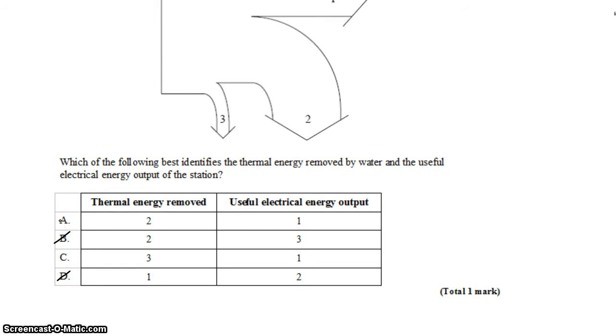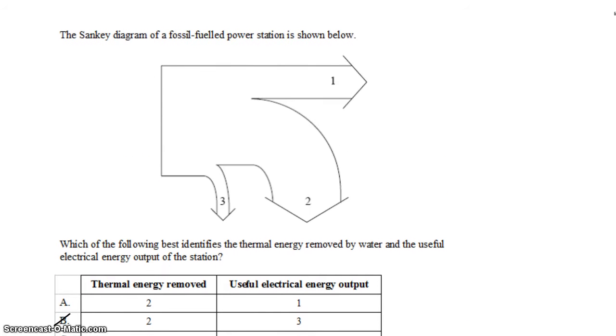As for the energy removed by water, what we're talking about here is the energy that we need to take out of the system in order to make our pressure differential. Remember that we're heating water by burning fossil fuels so that we can make steam and create pressure to push through a turbine and spin the turbine. But in order to push through the turbine, we need high pressure in front and low pressure behind.